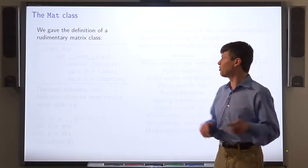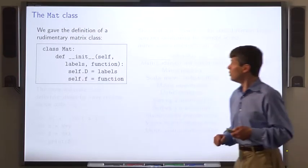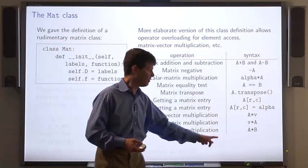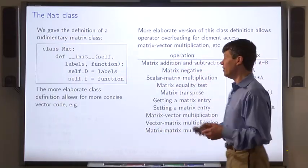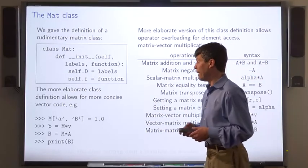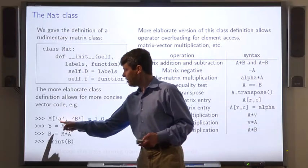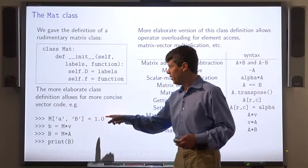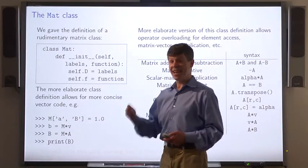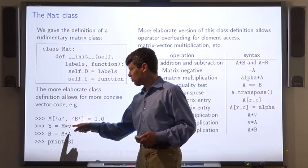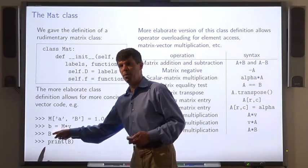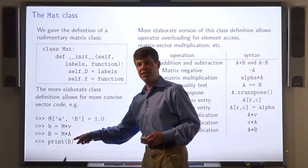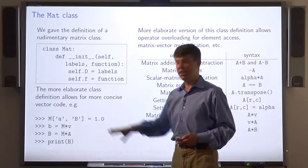Now, we gave the definition for a rudimentary matrix class. But we're going to write a much more elaborate one that incorporates all these different operations. And here's the syntax for each of them. This more elaborate class definition allows us to write much more concise matrix and vector code, such as this. This sets the entry corresponding to row label a and column label uppercase B to 1. This assigns to the variable b the vector obtained by multiplying the matrix m by the vector v. This assigns to the variable b the matrix obtained by multiplying the matrix m by the matrix a. And this pretty prints the matrix b.